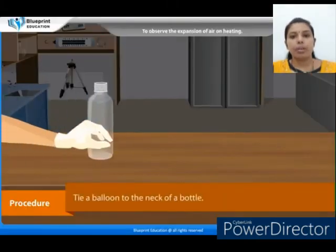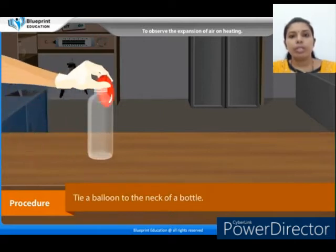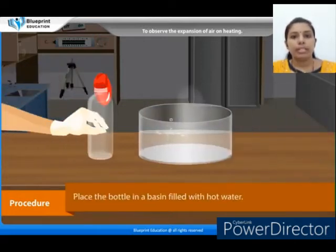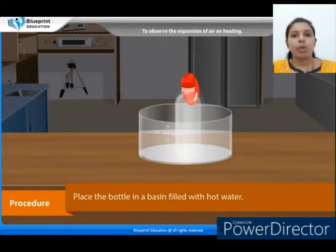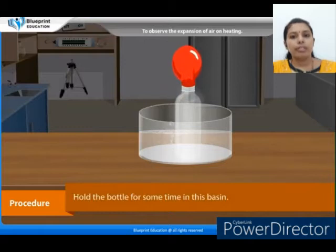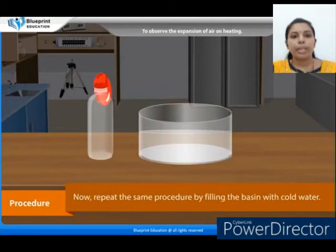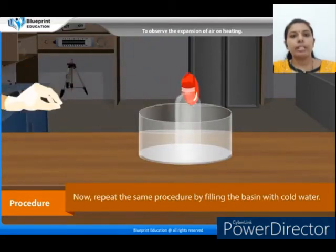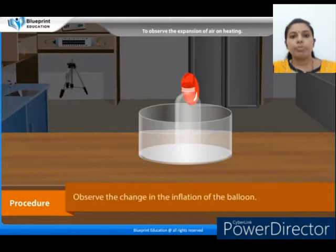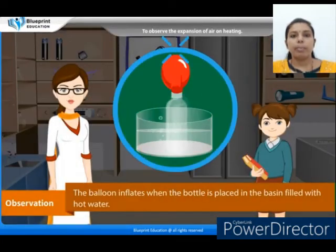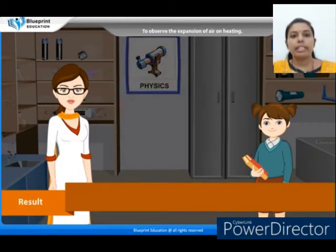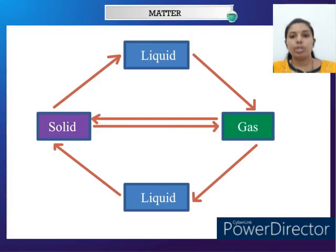Gases expand on heating. Tie your balloon to the neck of a bottle. Place the bottle in a basin filled with hot water and hold the bottle for some time. Now repeat the same procedure by filling the basin with cold water. Observe the change in the inflation of the balloon. The balloon inflates when the bottle is placed in the basin filled with hot water because the air inside the bottle becomes warm and expands.